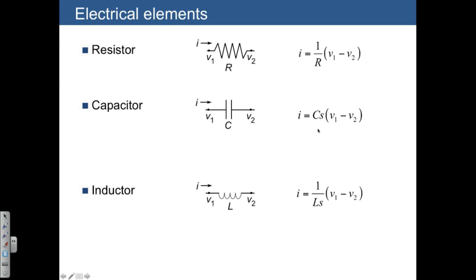The next thing that we want to do is look at these all as being very generic elements, where there's a value Z, such that the element law for any of these systems is going to be 1 over Z times V1 minus V2. And in that case, it's clear what Z is. For the resistor, Z is equal to R. For the inductor, Z is equal to LS. And then for the capacitor, we actually need 1 over CS.